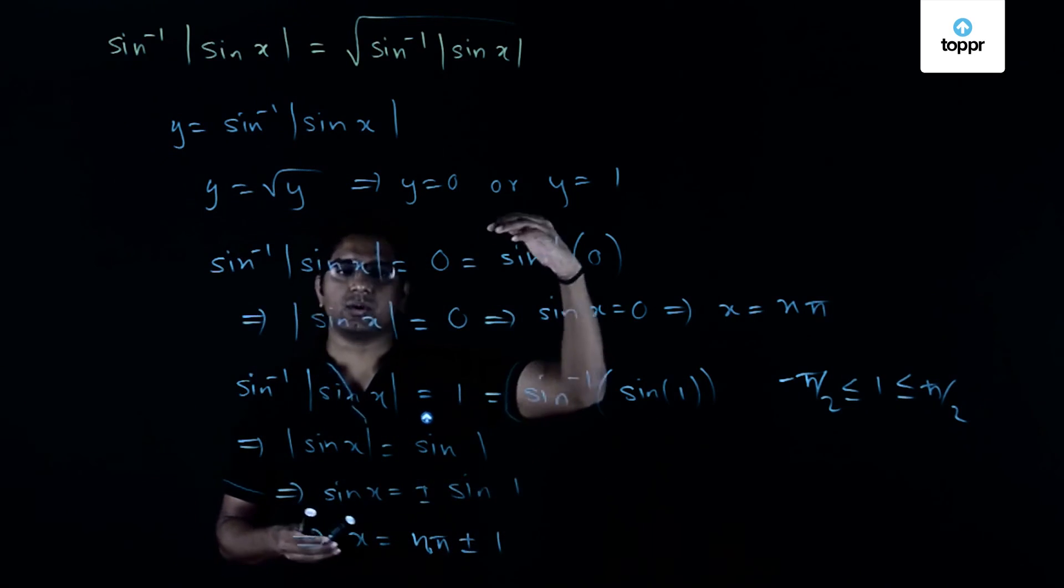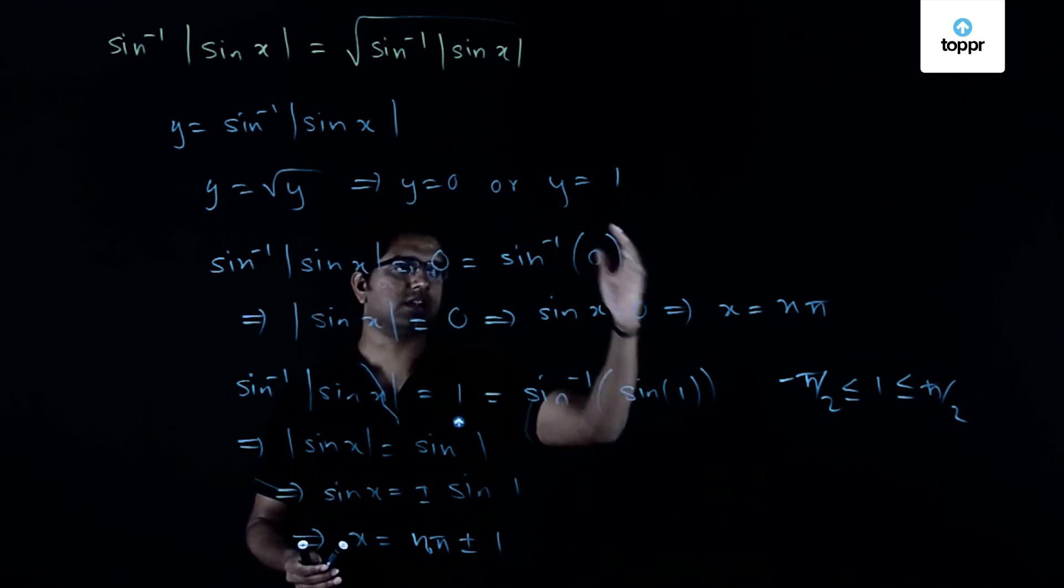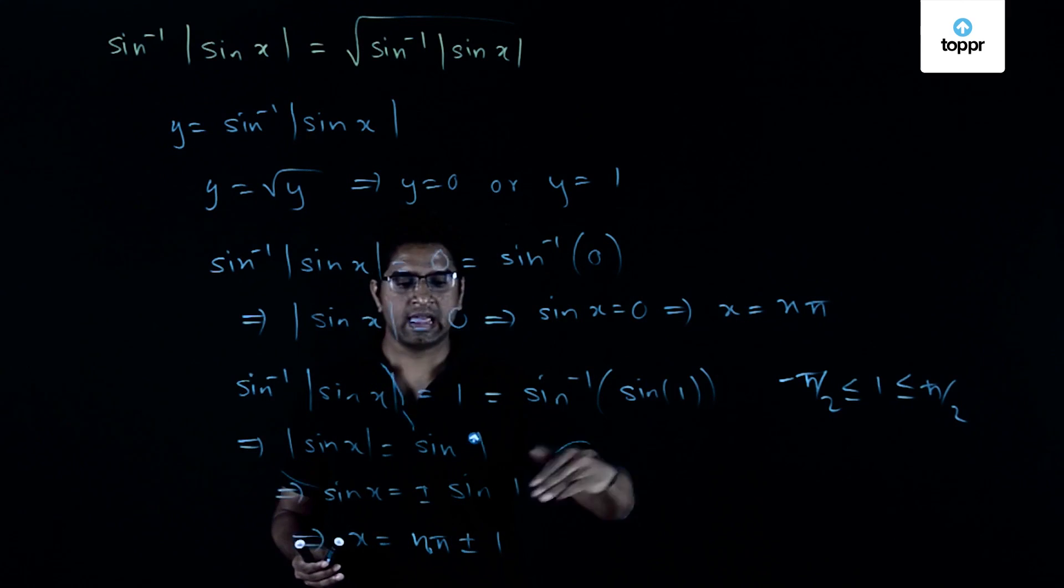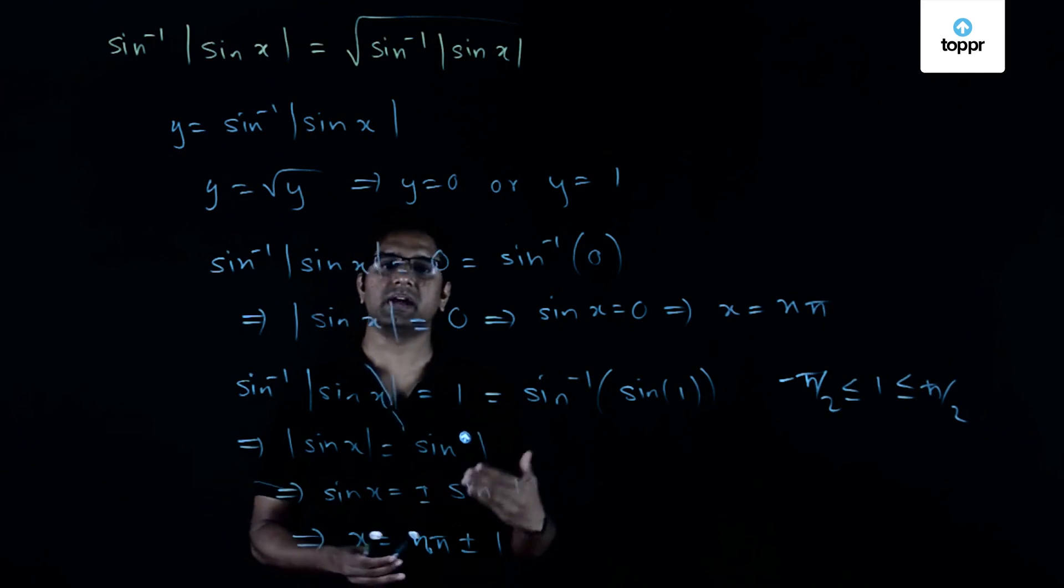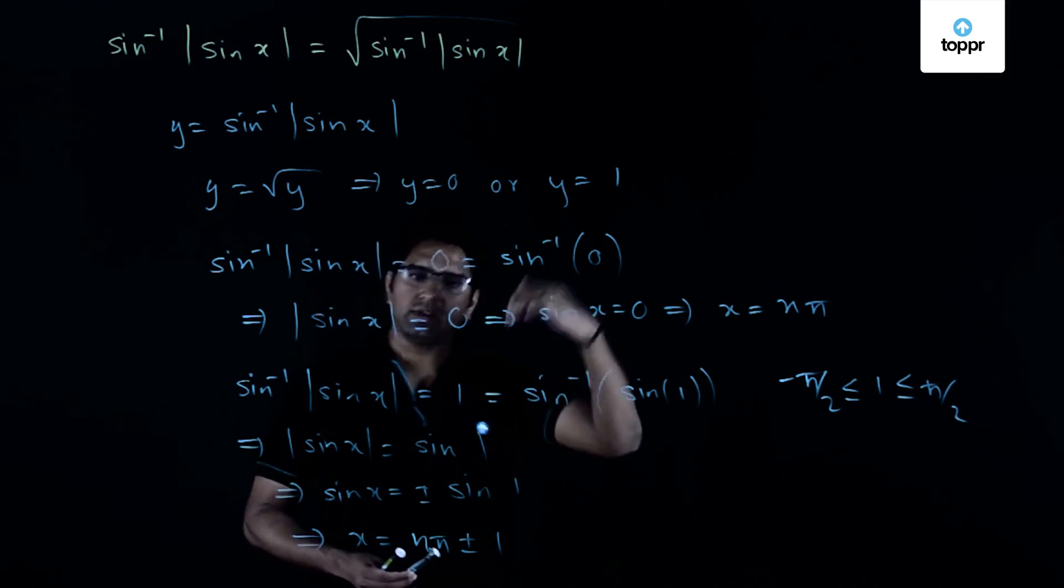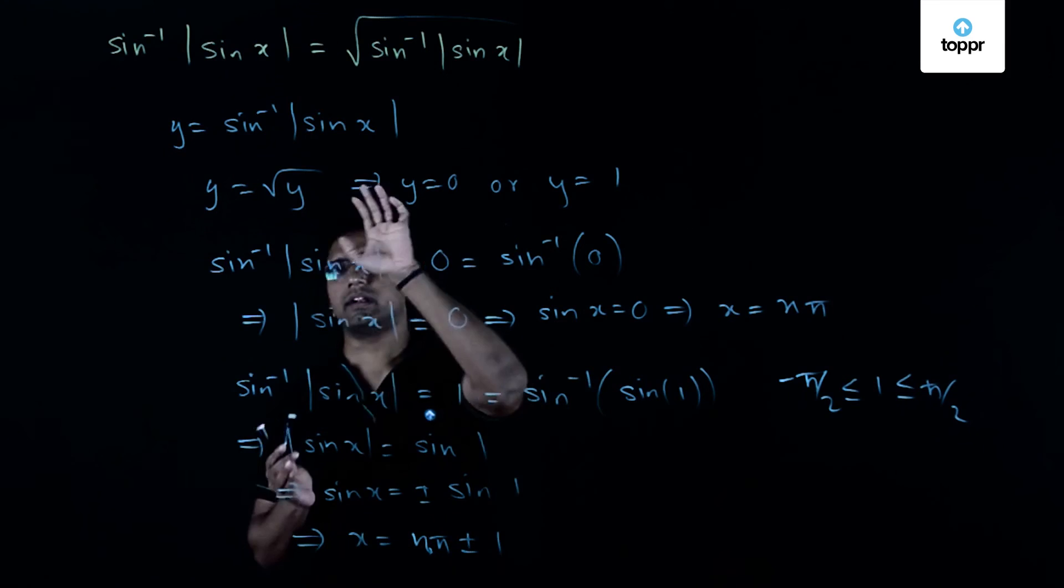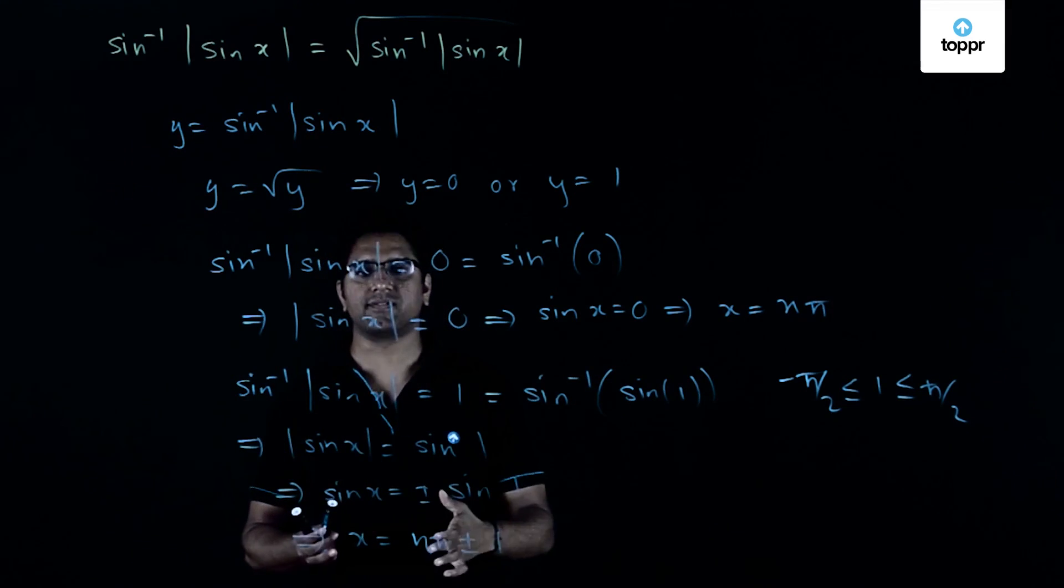So if you consider all the solutions of this equation, you have x equals n pi, x equals n pi plus 1, and x equals n pi minus 1. So it's actually a straightforward problem provided you make the necessary substitutions and do the calculations carefully.